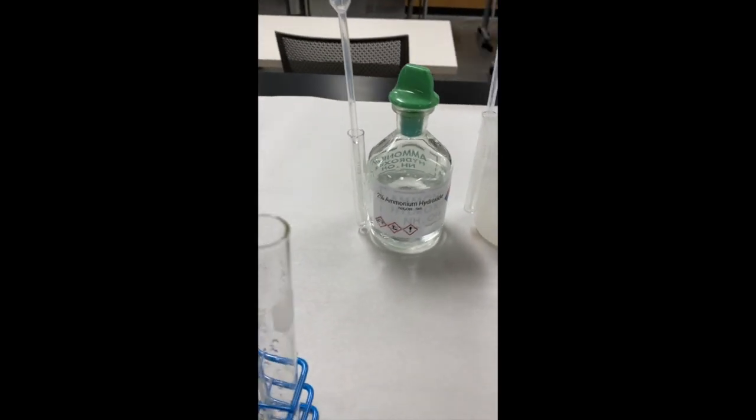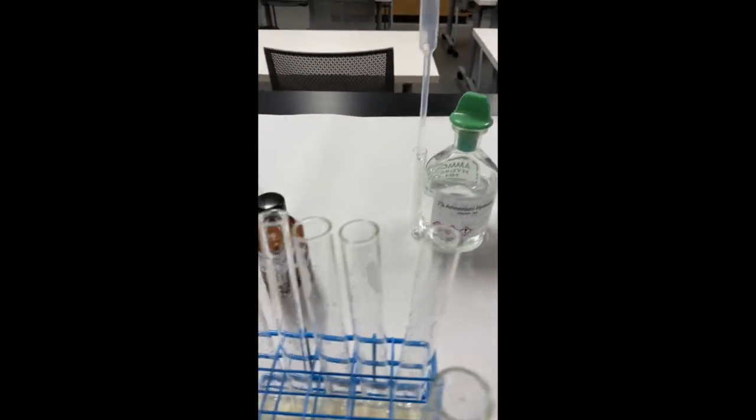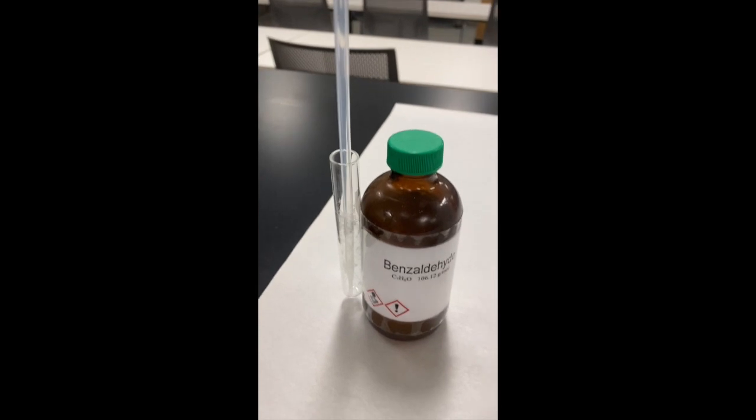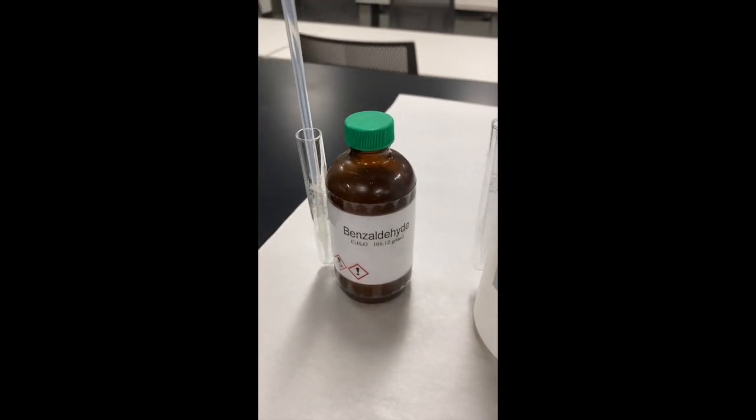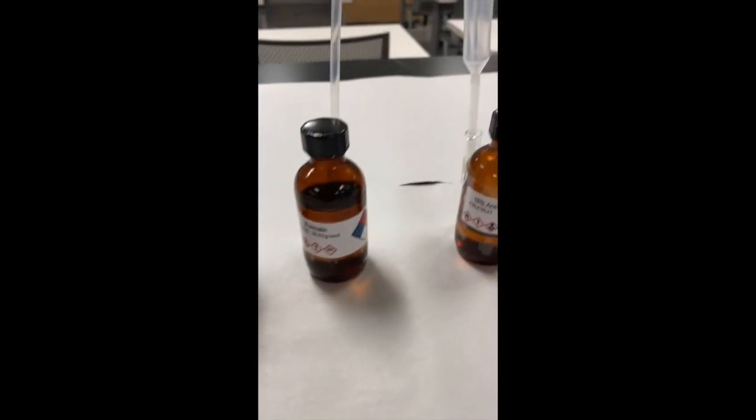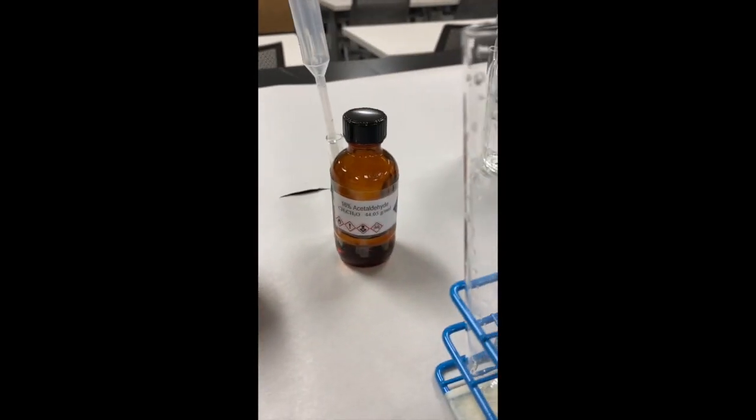I'm going to take that solution once I make it following the directions and disperse it into five test tubes equally. To the first test tube I'm going to add benzaldehyde, second acetone, third three pentanone, fourth formalin, and the last one acetaldehyde.